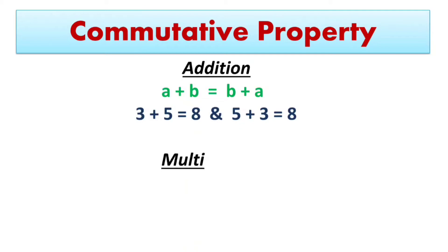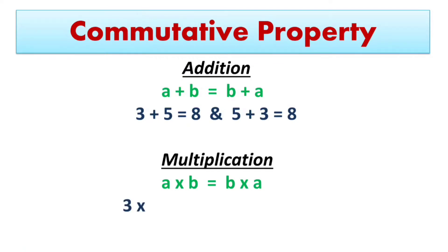For multiplication, in commutative property, A multiplied by B equals B multiplied by A. That is, 3 multiplied by 5 equals 15 and 5 multiplied by 3 equals 15. That means in commutative property, the sum and product is the same regardless of the order in which the numbers are placed.